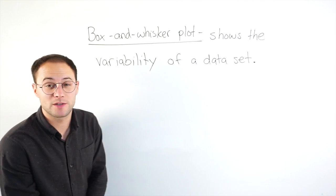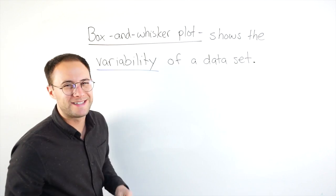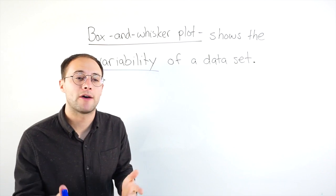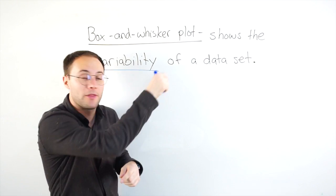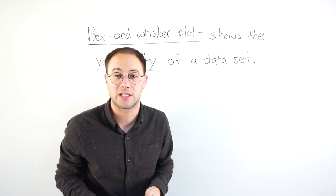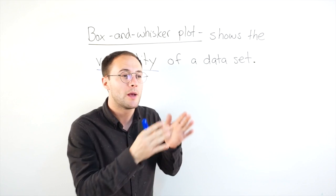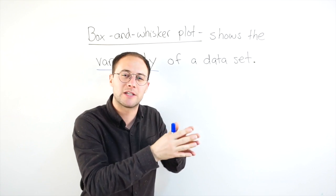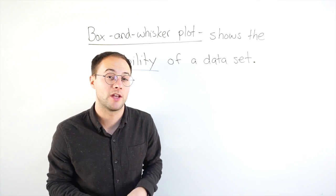A box and whisker plot shows the variability of a data set. If you haven't learned about measures of variation, go back and check out this video here that I made about measures of variation. A box and whisker plot uses those same measures, but we just take those measures and make it a lot easier to look at than just looking at the numbers.